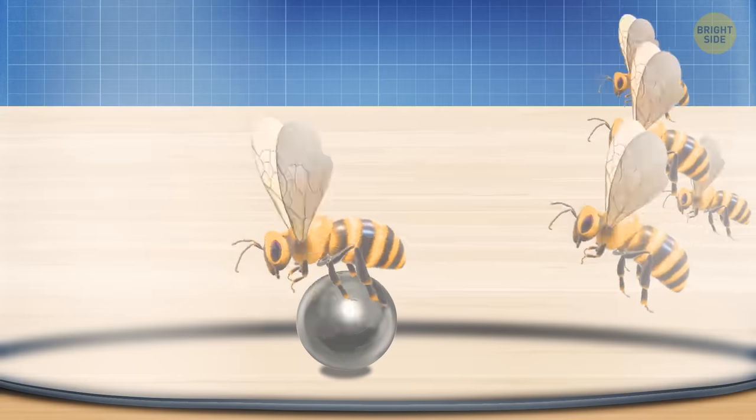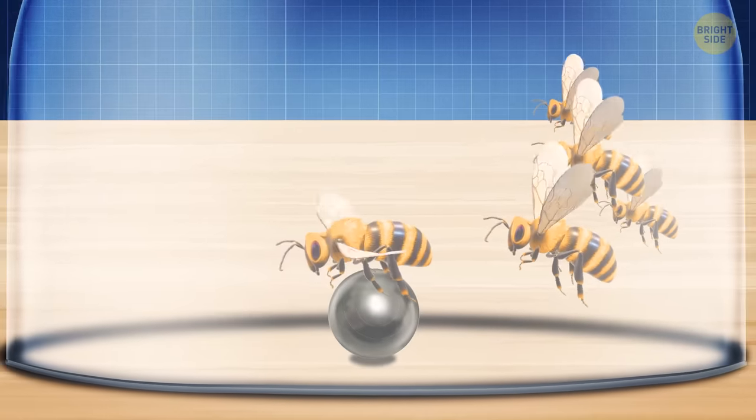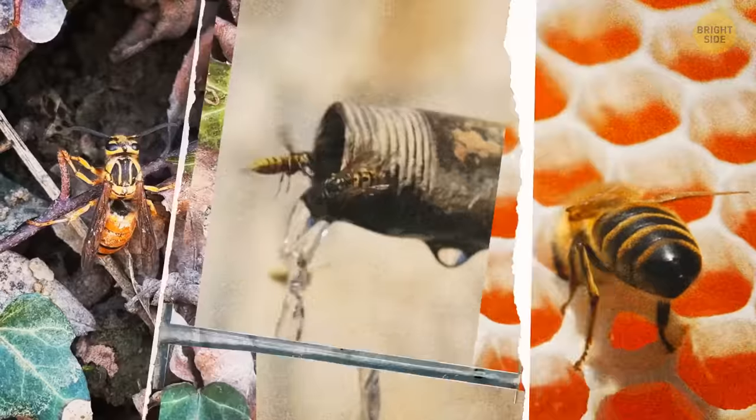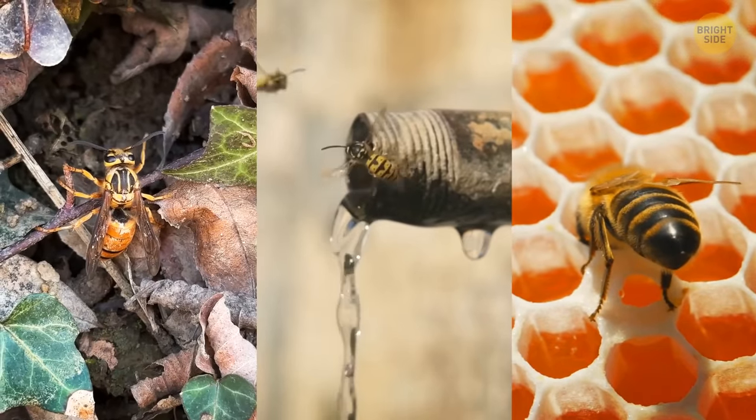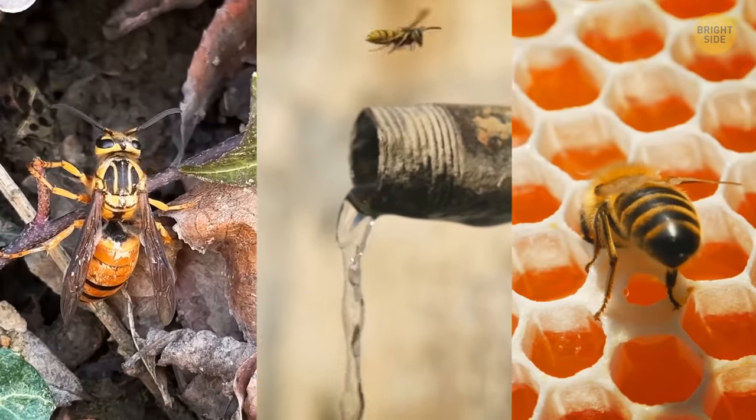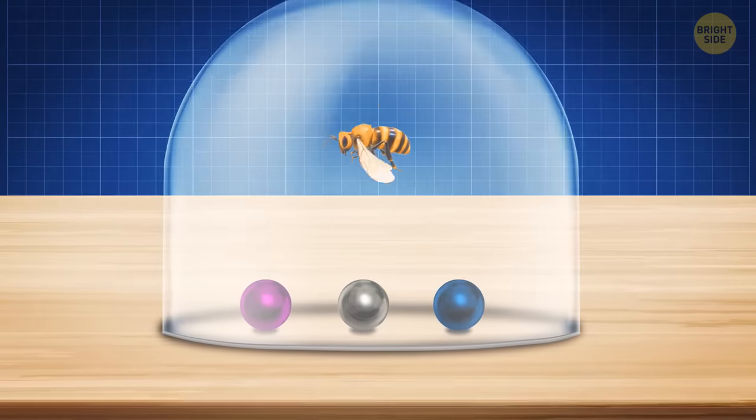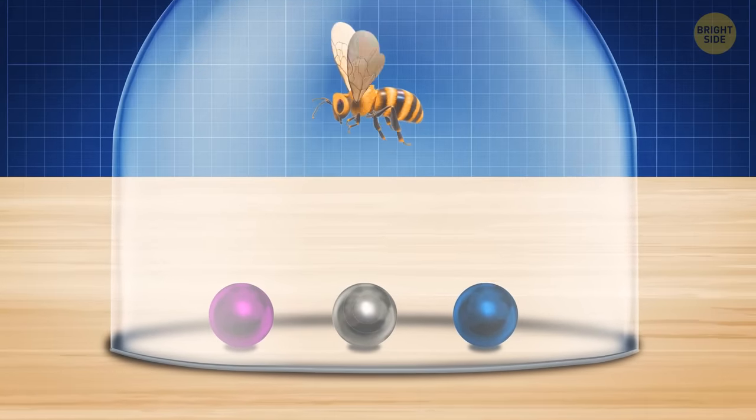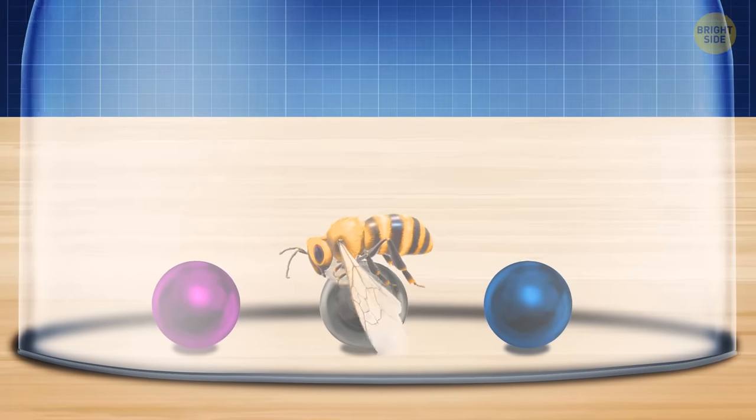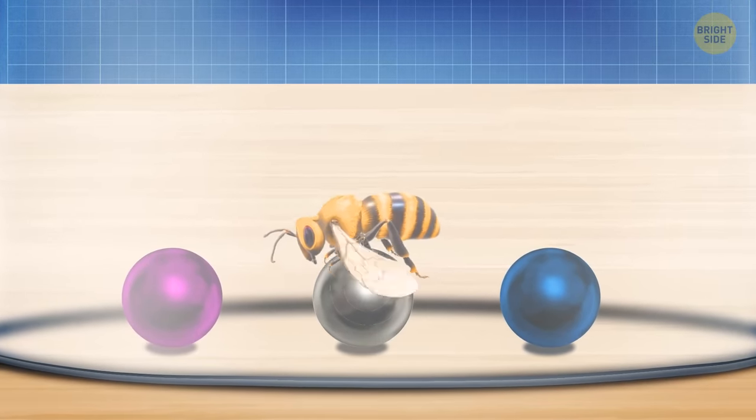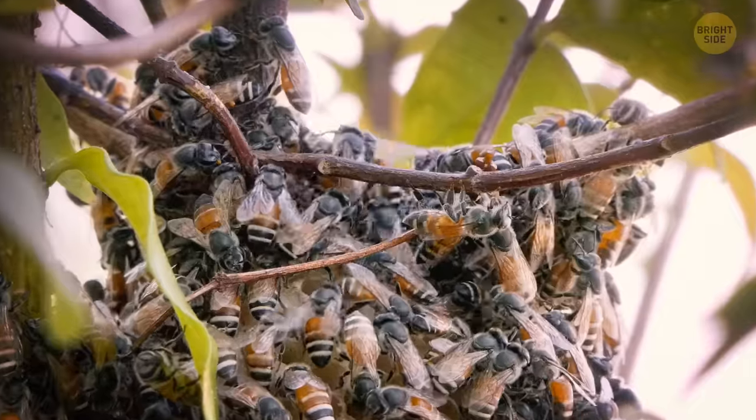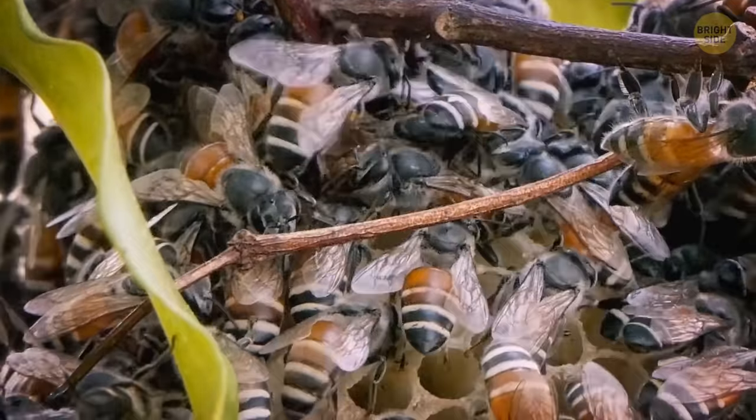And, once again, they showed other bees how to do it. What's interesting is that they didn't just copy blindly. When faced with new situations, they improved on what they had learned, choosing the most efficient route to success. For instance, when given a choice between different colored balls, the bees picked the one closest to the center, even though they had been trained with different conditions. This shows that bees aren't just following instructions. They're thinking and adapting to new challenges.